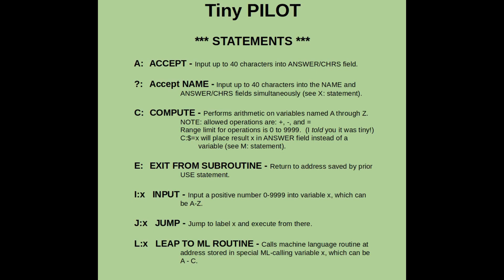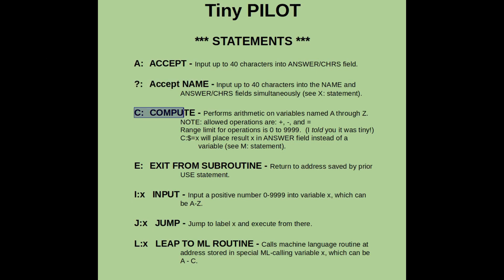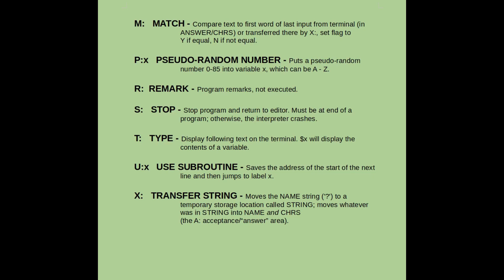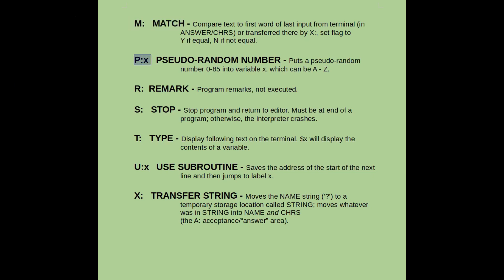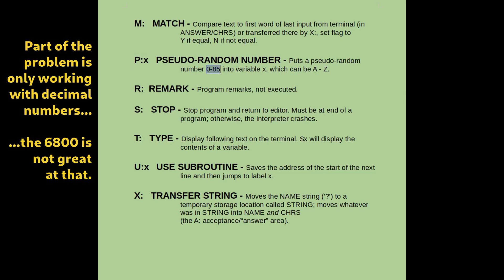Here are the statements we have available. We can do some input, compute something, do addition, subtraction, and compare. We can exit out of a subroutine — that's just return, essentially. Input a variable. We can jump, which is go to, essentially. Leap, which is calling a machine language program. Here we've got our main match statement — that's a big deal. And we can make a tiny pseudo-random number. I came up with the best random number generator I could.